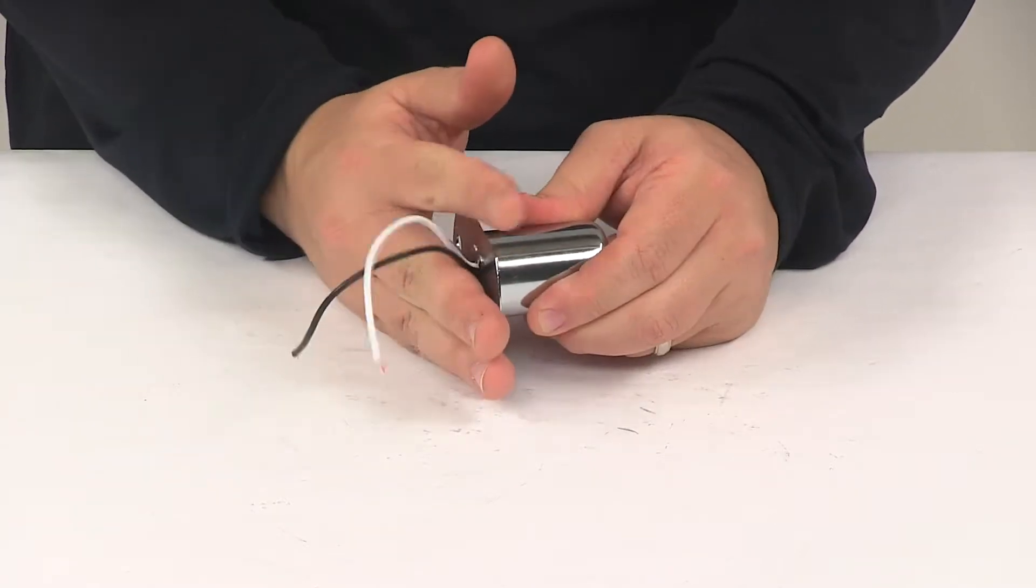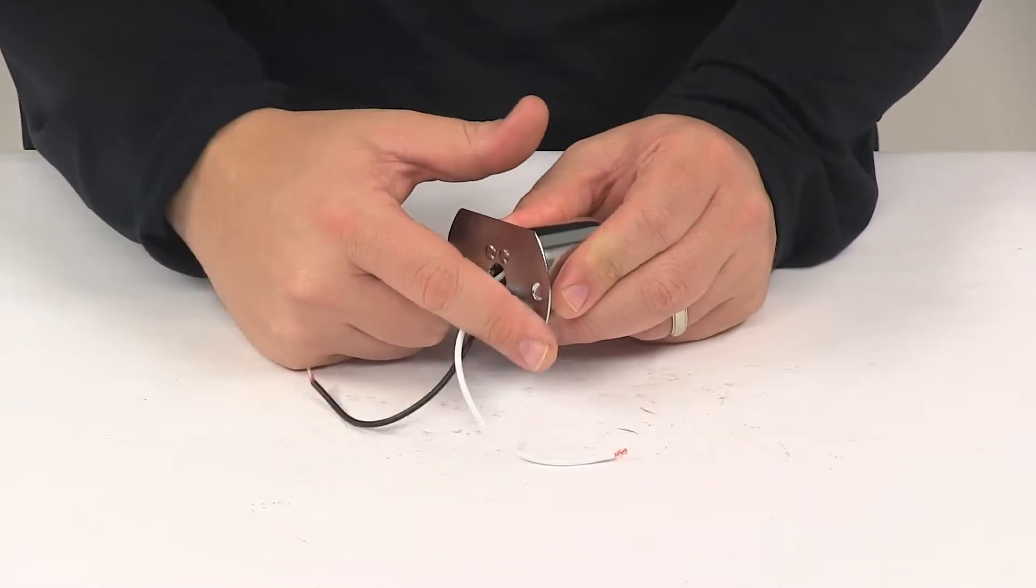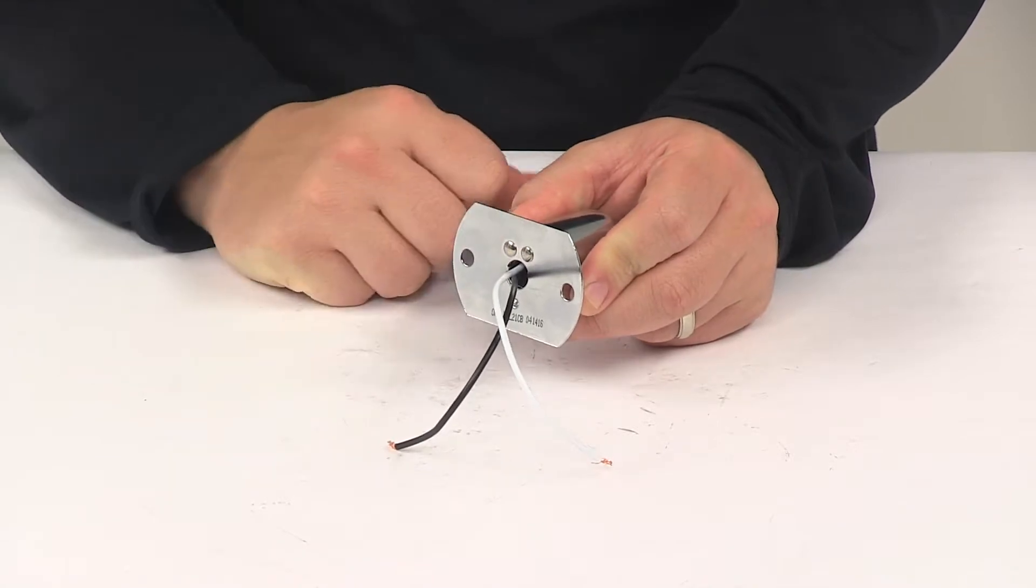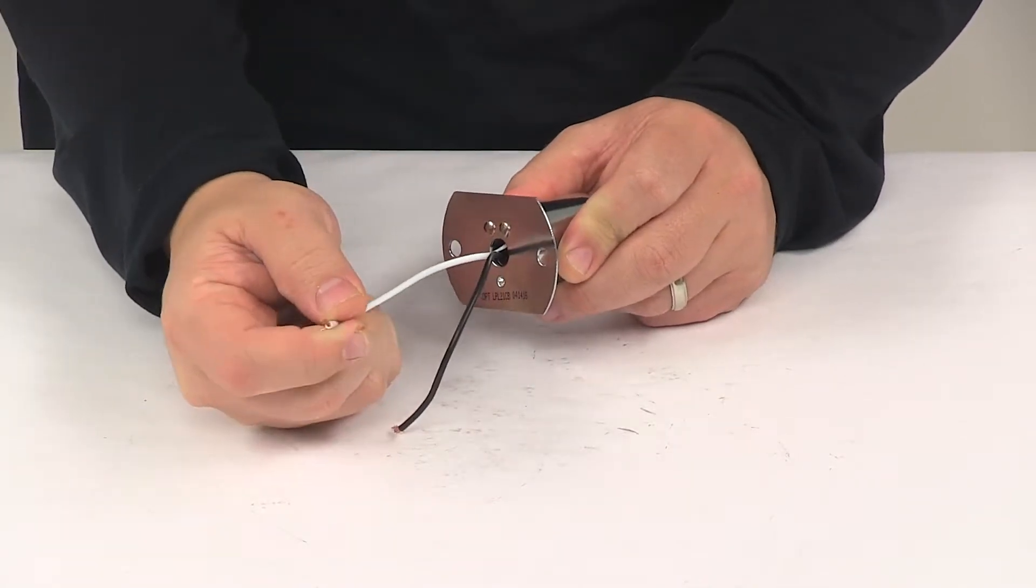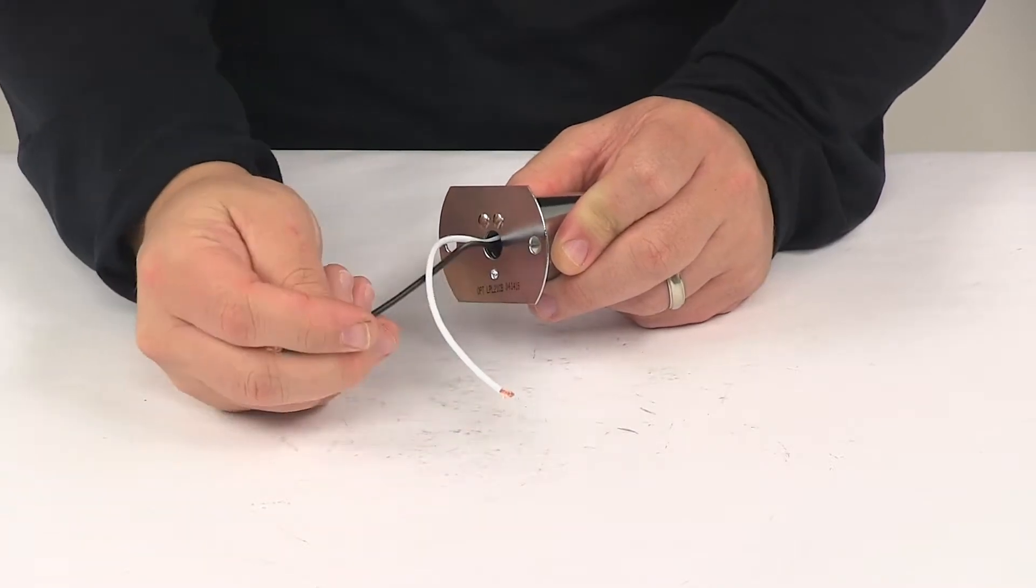It does mount directly on the surface of the trailer with the built-in mounting flange. Mounting hardware is not included. You will notice that it has the two pre-drilled holes. And it's a two-wire design. White wire is your ground. Black wire is your power.